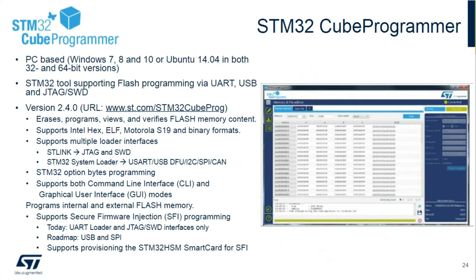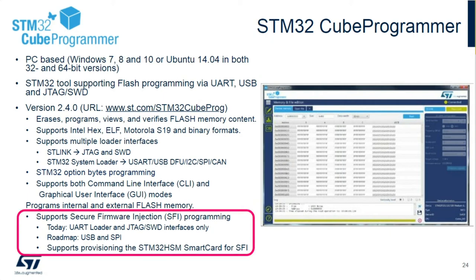We will use the STM32 Cube Programmer to download hex files onto the L5 device, erase flash, set option bytes to enable TrustZone, and set up watermarks for the flash, which I'll cover in later slides. The Cube Programmer has many features beyond the ST-Link interface — there's also UART, SPI, and I2C interfaces. There's also a secure firmware injection programming tool and a trusted package creator that goes along with it, which you may want to investigate on your own.